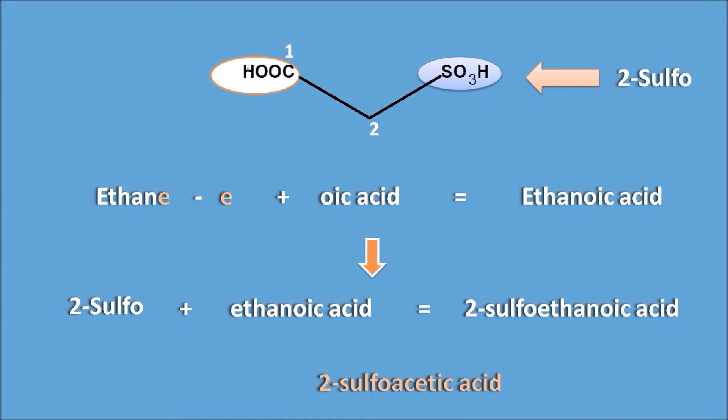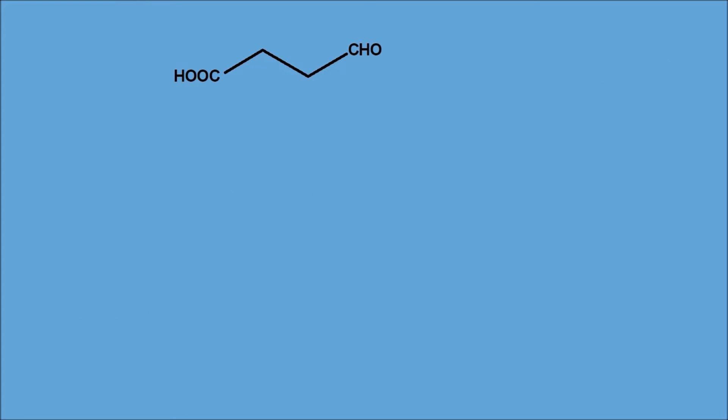In this example, there are again two functional groups: one is the carboxylic acid and the other is the aldehyde. Again, carboxylic acid should be given first preference, so we number: one, two, three, and four. One important thing to consider is that the carbon of the aldehyde is not treated as a side chain — it is involved in the chain, so we count the aldehyde carbon in the parent chain as well.